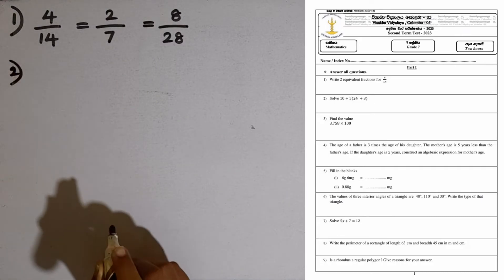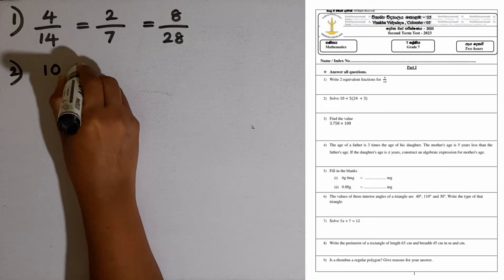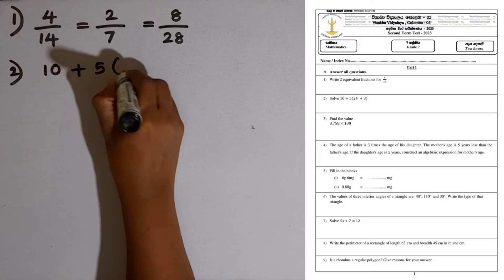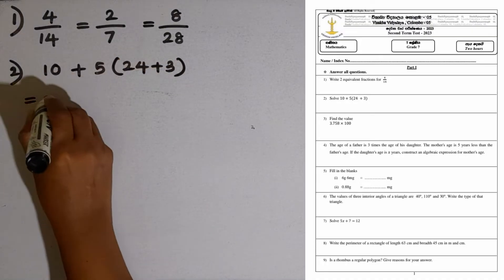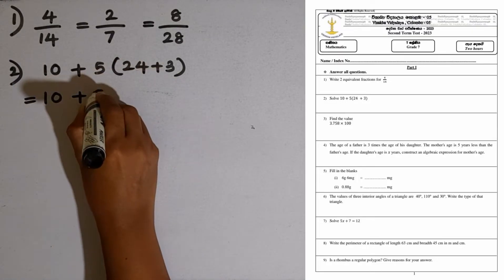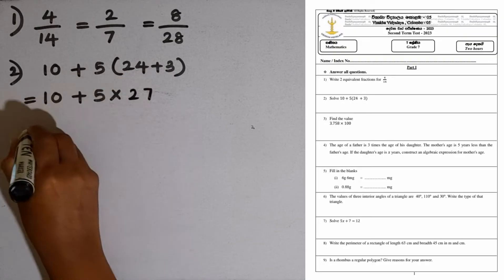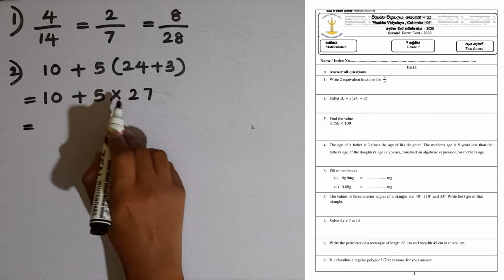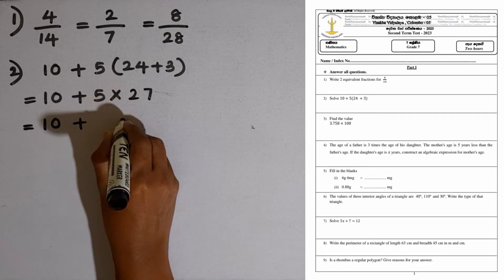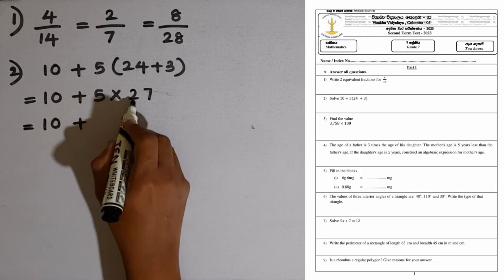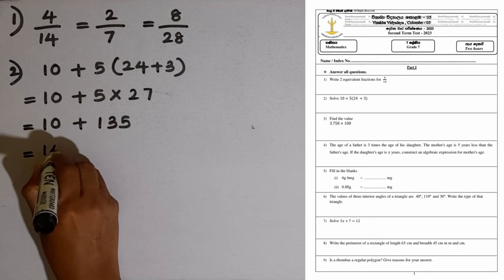Question number 2. Solve. We are given this numerical expression: 10 plus 5 times, then within brackets we are given 24 plus 3. First, we have to perform the operation inside the bracket. 5 multiplied by 24 plus 3 is 27. Now we have to perform this multiplication: 10 plus 5 multiplied by 27. 5 times 27 is 135. Plus 10 is 145.